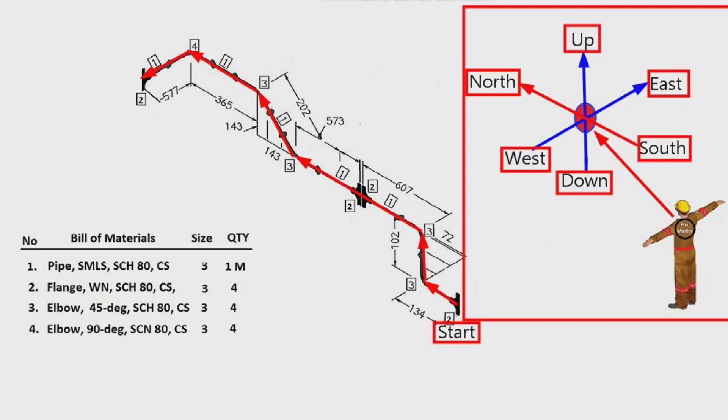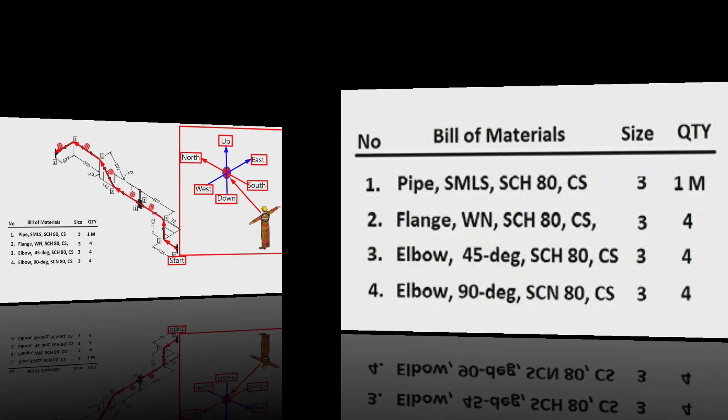So, the correct reading of the pipe drawing is completed. Let's find out the list of materials used in this drawing. Detail number one was used in several places in the pipe drawing. Let's look at the material list.